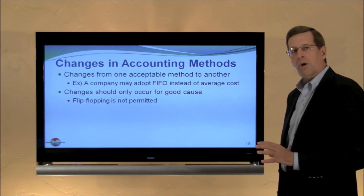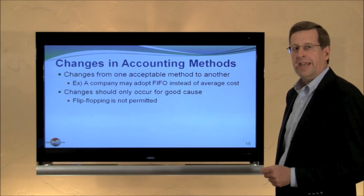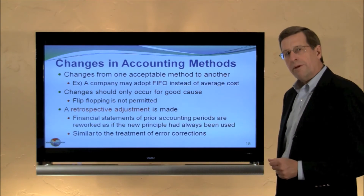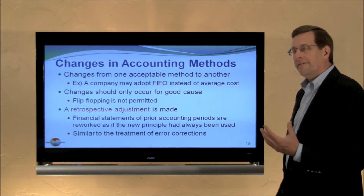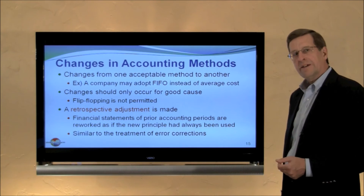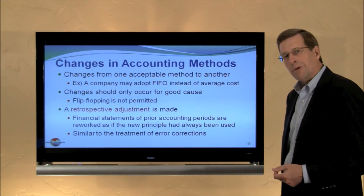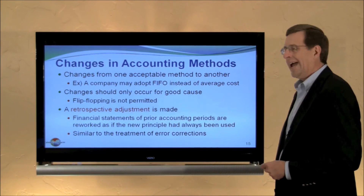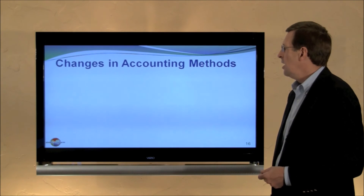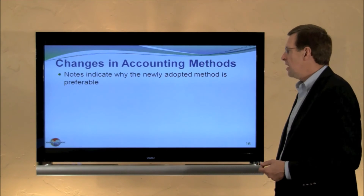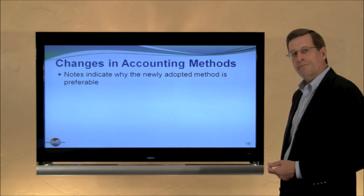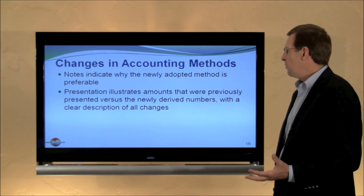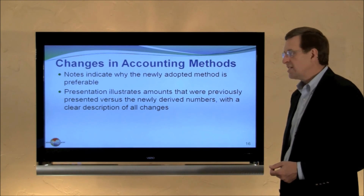Changes should only occur for good reason — we don't want to flip-flop back and forth. Simply seeking higher net income is not deemed a good reason for a change; there should be a substantial explanation. When changes are made, they are made by retrospective adjustment: financial statements of prior accounting periods are reworked as if the new principle had been in use all along. This is similar to the treatment for corrections of errors, though we call error corrections 'prior period adjustments' and accounting method changes 'retrospective adjustments.' Full disclosure is required, with notes indicating why the newly adopted method is preferable, and a presentation comparing previously reported amounts to the newly derived amounts.